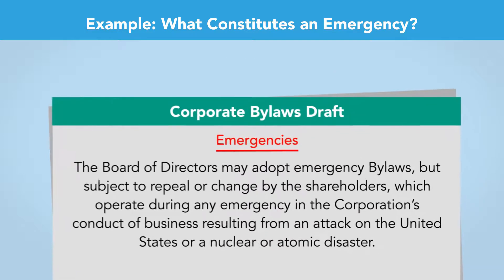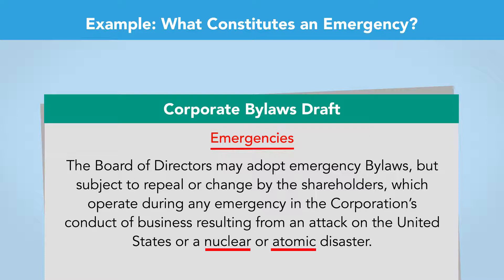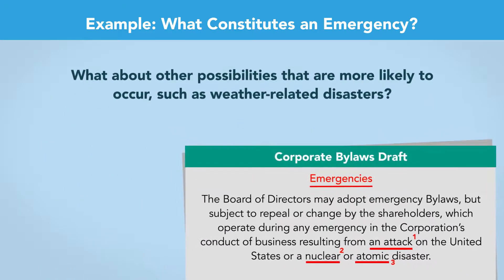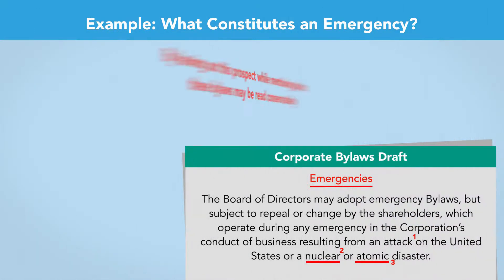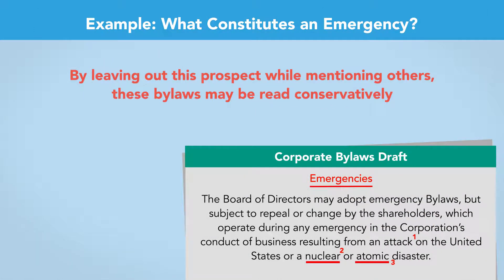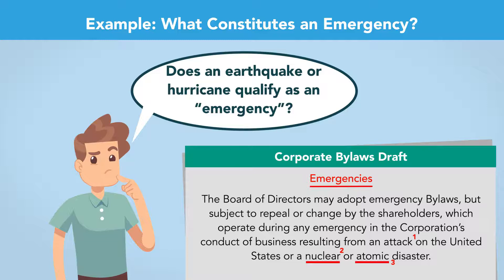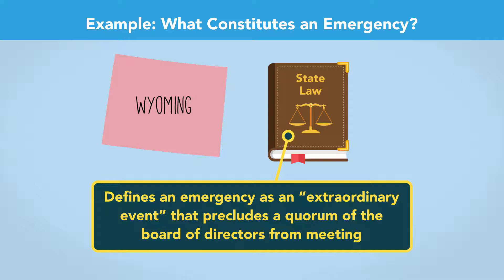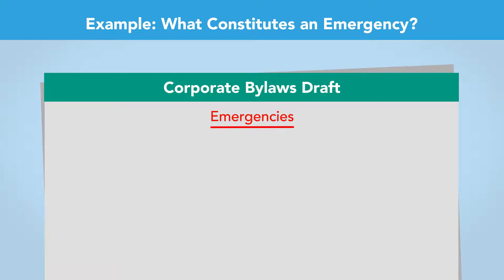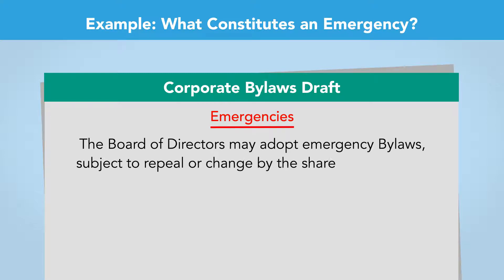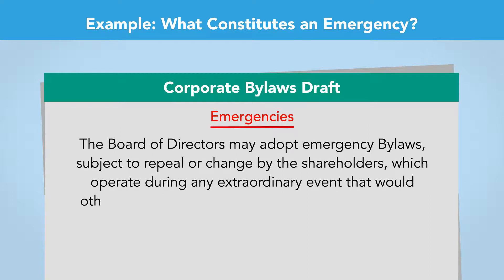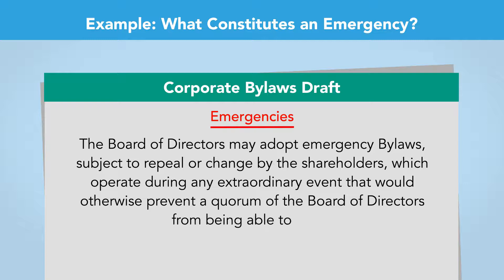Here, aside from the vague wording—for example, what's the difference between a nuclear disaster and an atomic one—the bylaws narrowly define an emergency as these three possibilities. But what about other possibilities that are more likely to occur, such as weather-related disasters? By leaving out this prospect while mentioning others, these bylaws may be read conservatively. This can create confusion about whether an event like an earthquake or hurricane could qualify as an emergency. Wyoming law defines an emergency as an extraordinary event that precludes a quorum of the board of directors from meeting. Rephrasing the emergency bylaws provision could produce the following section: "The board of directors may adopt emergency bylaws, subject to repeal or change by the shareholders, which operate during any extraordinary event that would otherwise prevent a quorum of the board of directors from being able to meet."